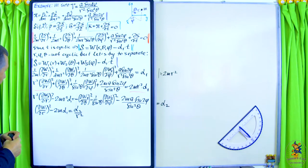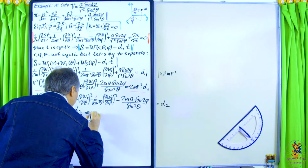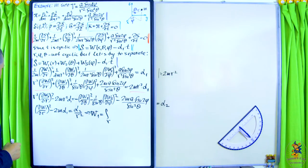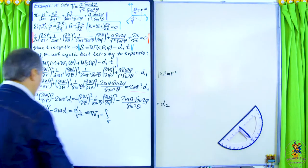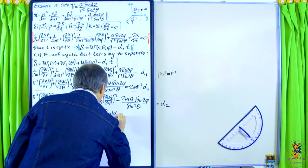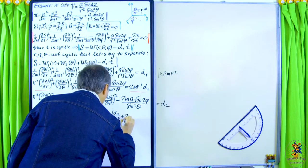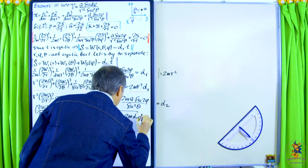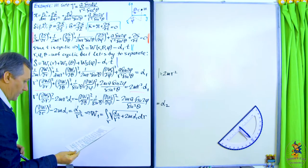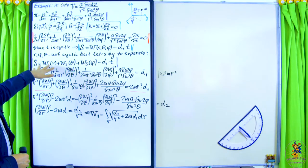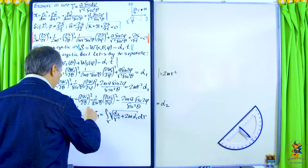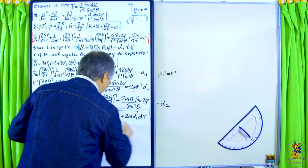The equation for W₁ is: (∂W₁/∂r)² − 2mα₁ = α₂/r². This can be easily solved, and we get W₁ as an integral: W₁ = ∫√(α₂/r² + 2mα₁) dr. We managed to separate r and found W₁.